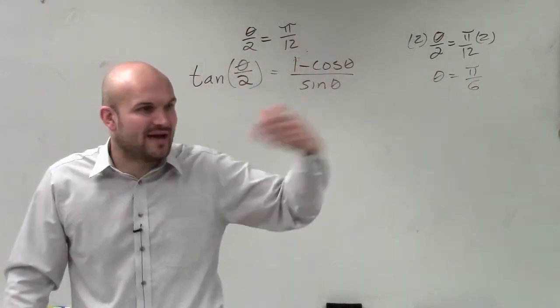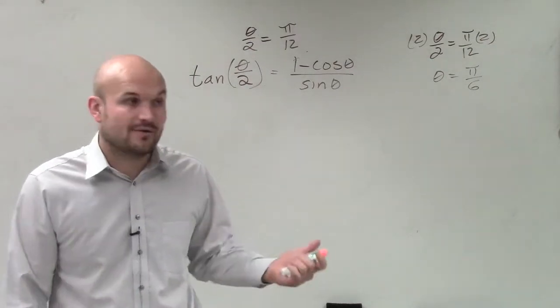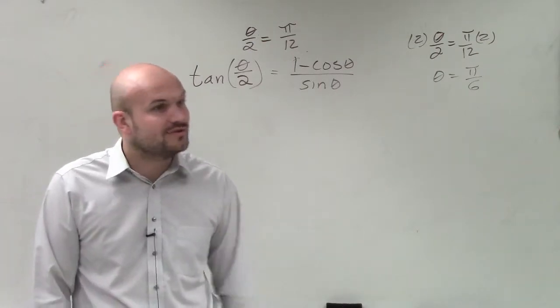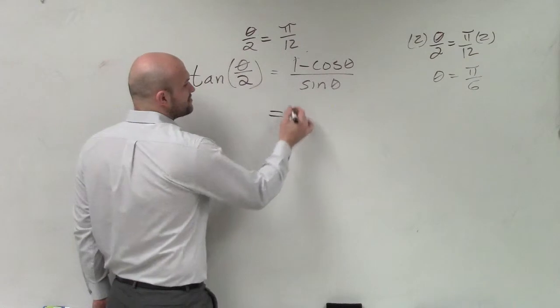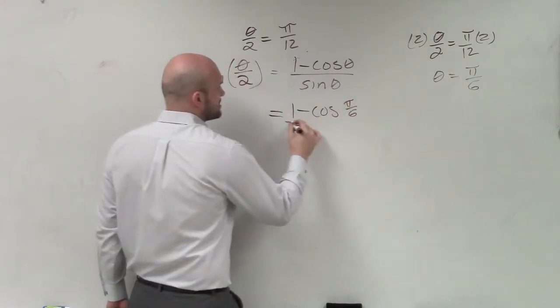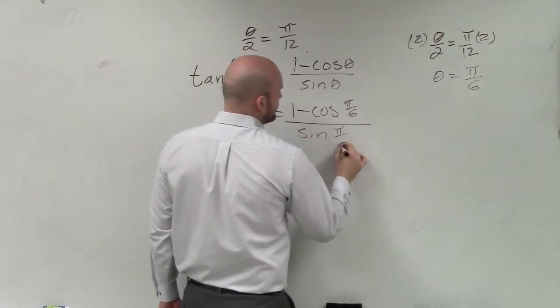Now, can I evaluate for π over 6 with sine, cosine, and tangent? Yes. Can I evaluate for π over 12 for sine, cosine, and tangent? Not using our unit circle that we've done, right? You have to use a calculator and get some approximate values. So now I just plug it in: 1 minus the cosine of π over 6, all over the sine of π over 6.